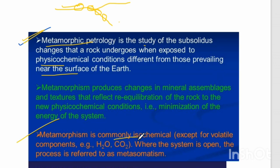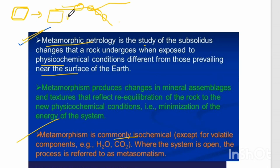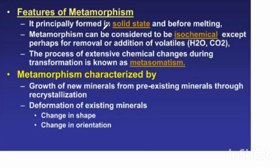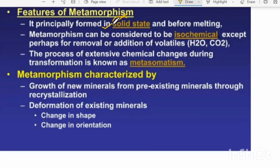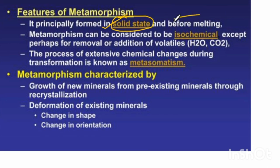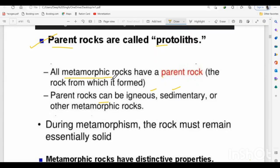For example, if there is a rock made of quartz — say a sandstone — it will change into quartzite. All these transformations take place only in the solid state. No melting is occurring in metamorphic rocks. All metamorphic rocks have a parent rock.